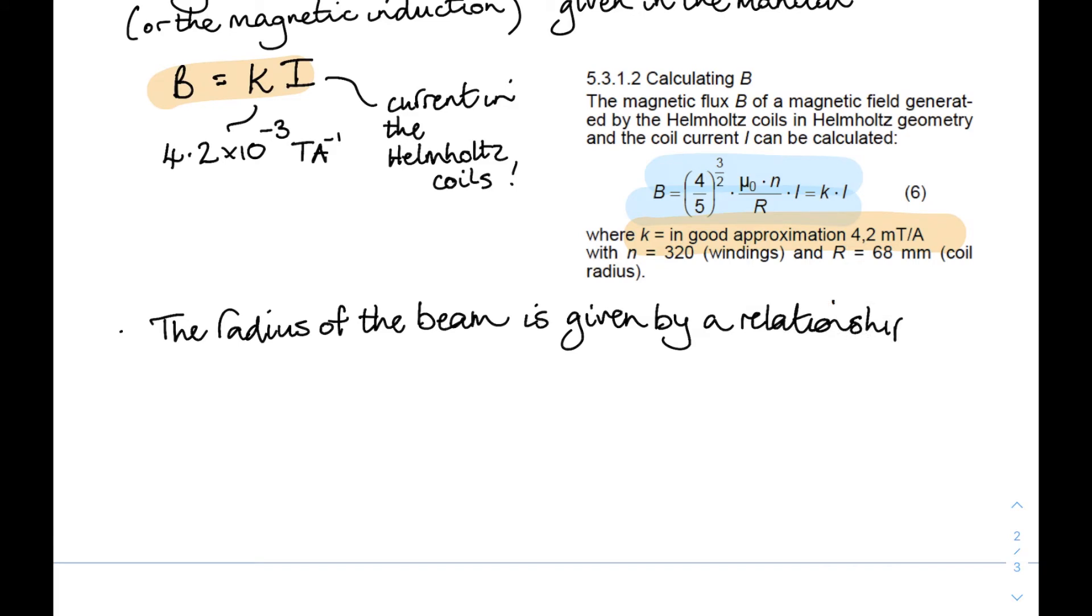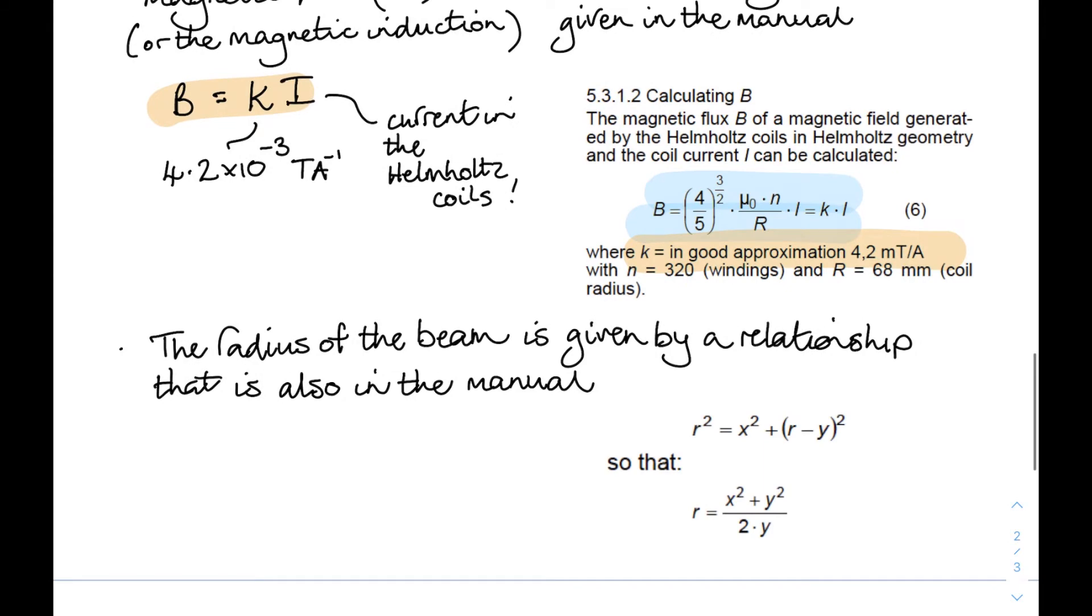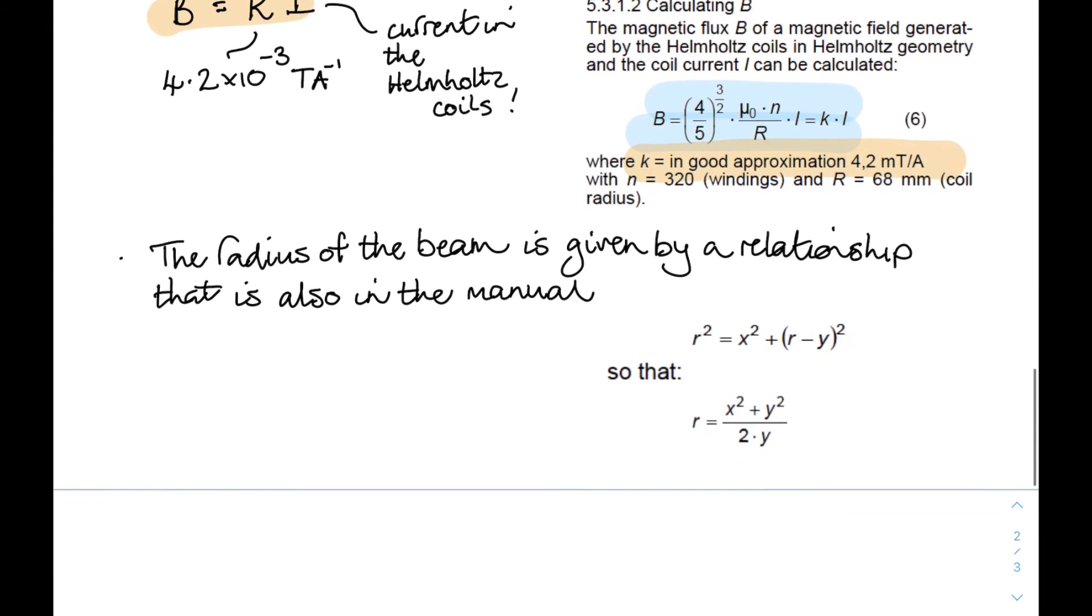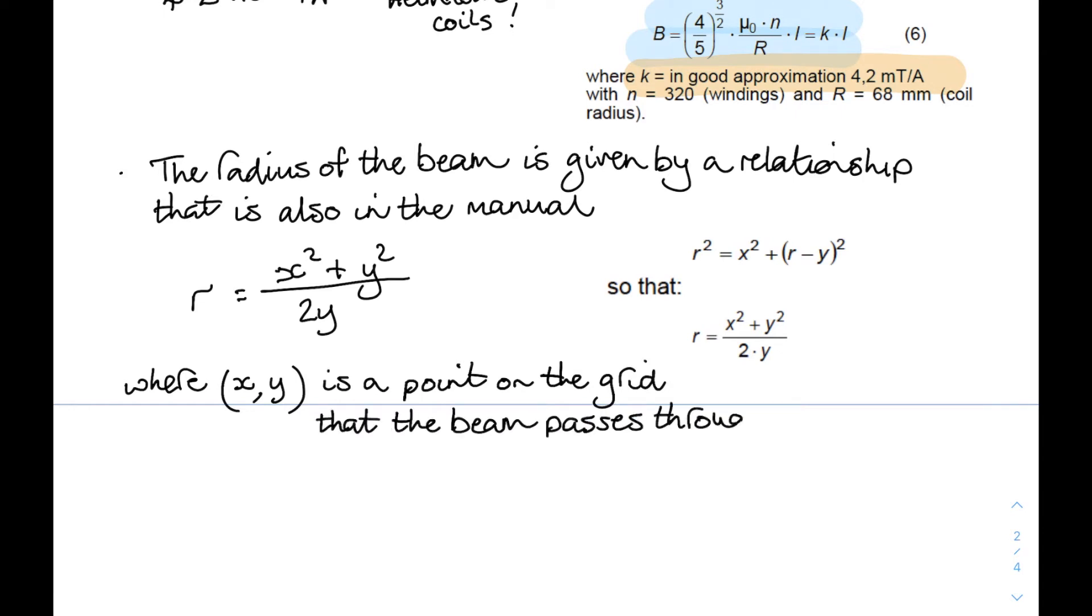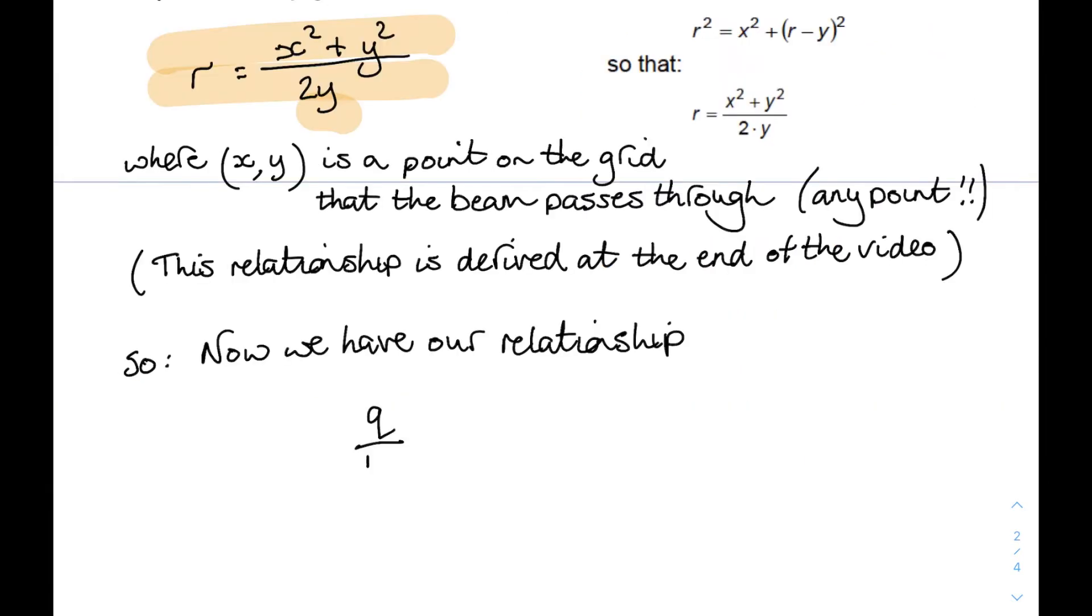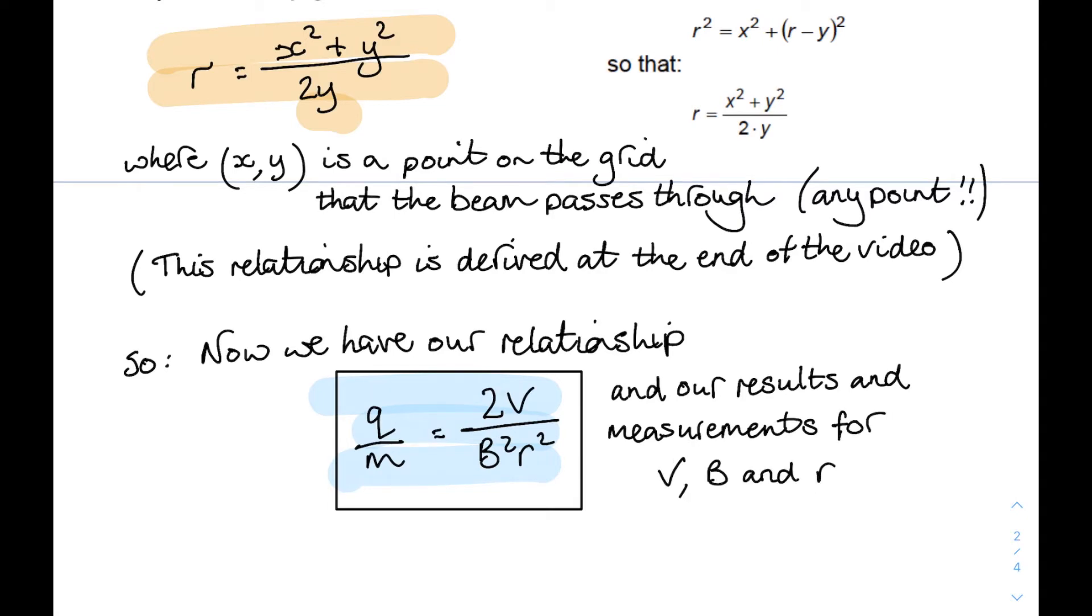And the last thing we need is the radius of the beam, and the relationship for that is also given in the instruction manual. And we will be deriving this relationship a little bit later on, right at the very end of the video. But the radius is x squared plus y squared over 2y, where xy is just a point on the grid that the electron beam passes through. Now it can be any point. So now we've got our relationship, and all we need now is our measurements and results for V and B and r, and we can proceed.